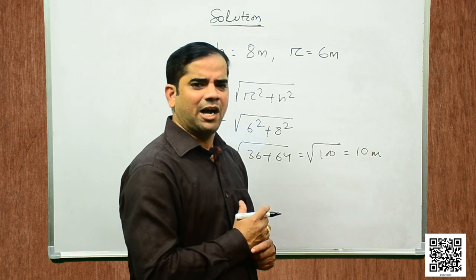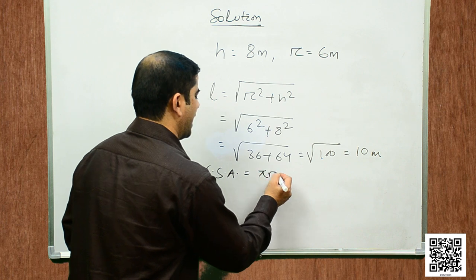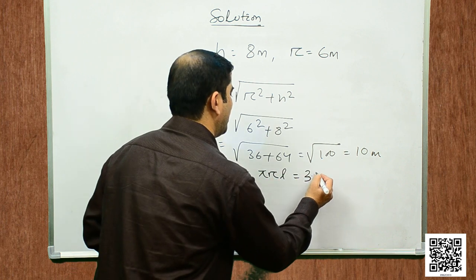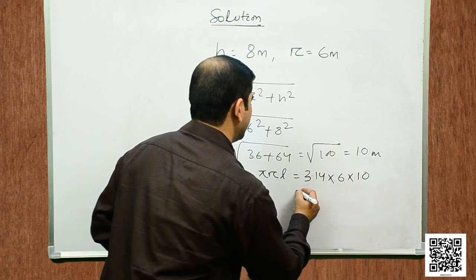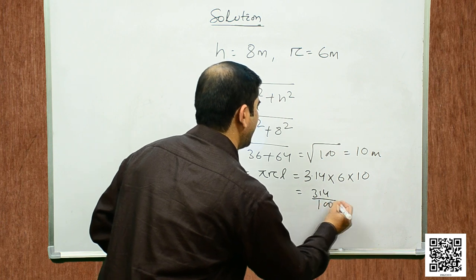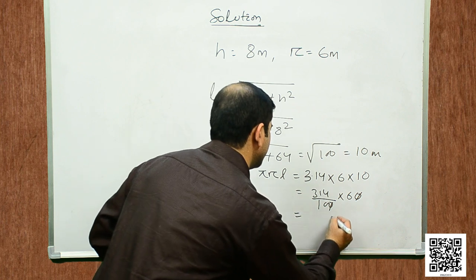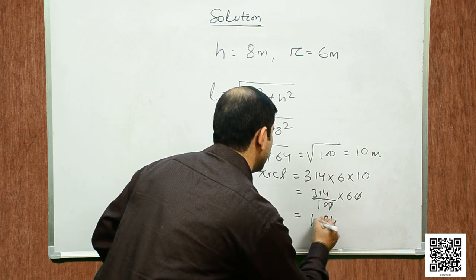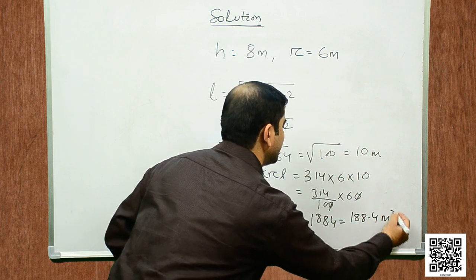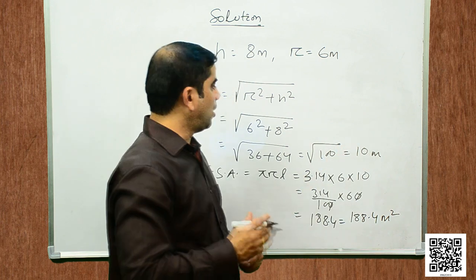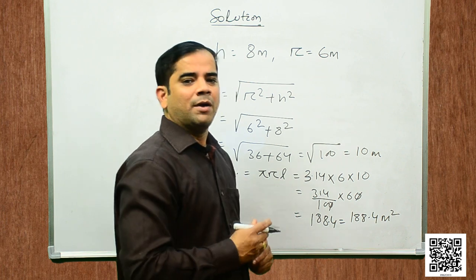Now, let us find the curved surface area of the cone. Curved surface area is equal to π r l, that is 3.14 × 6 × 10, which is 314 divided by 100 into 60, giving us 188.4 square meters. So, the curved surface area of the cone is 188.4 square meters.